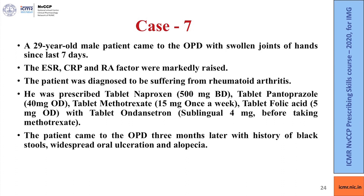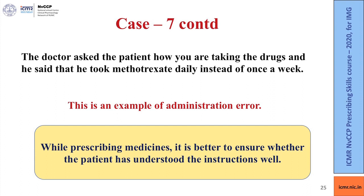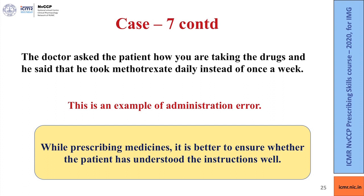A 29-year-old male patient came to the OPD with swollen joints of the hands for 7 days. ESR and CRP were markedly raised and RA factor was very high; the patient was diagnosed with rheumatoid arthritis. He was prescribed tablet naproxen 500 mg BD, tablet pantoprazole 40 mg OD, tablet methotrexate 15 mg once a week with tablet ondansetron sublingual 4 mg before taking methotrexate, and tablet folic acid 5 mg once daily. Three months later, the patient came to the OPD with a history of black stools, widespread oral ulceration, and alopecia. On questioning, the doctor found that the patient had been taking methotrexate daily instead of once a week. This is an example of an administration error; while prescribing drugs like methotrexate, it is important to ensure the patient has understood the instructions well in order to avoid such medication errors and the subsequent adverse drug reactions.